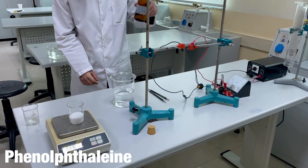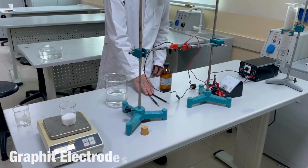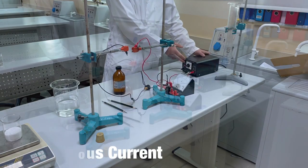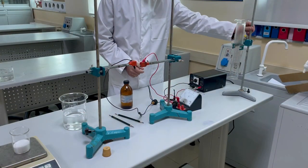We need the phenolphthalein indicator. We need 2 graphite electrodes. Also we need continuous electricity. We will need a glass tube to collect hydrogen.